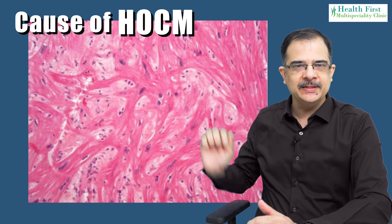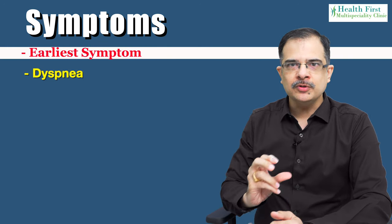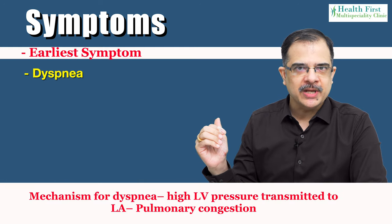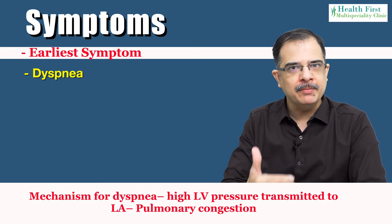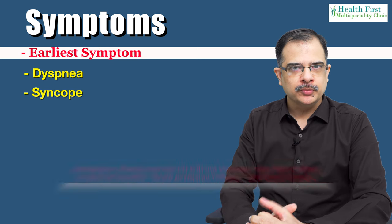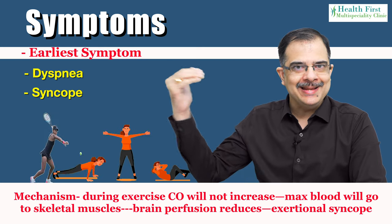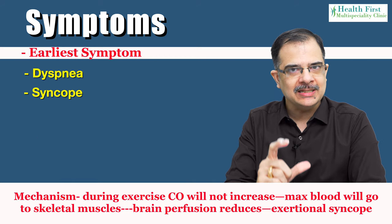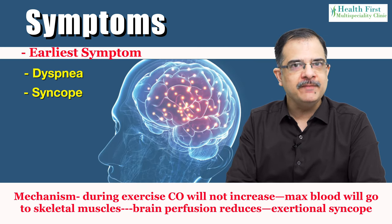In the clinical features, the earliest symptom is dyspnea. The reason is that left ventricle pressure is high and that pressure is transmitted to the left atria; if left atrial pressures are high, there is pulmonary congestion, which causes dyspnea. Also, the patient has outflow obstruction, so during exercise the cardiac output cannot increase due to the obstruction, and blood flow goes to skeletal muscles but not to the brain, causing exertional syncope attacks.